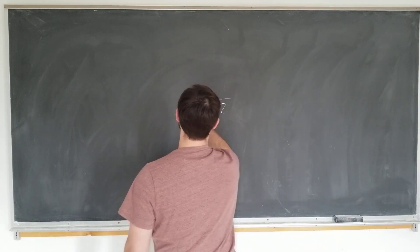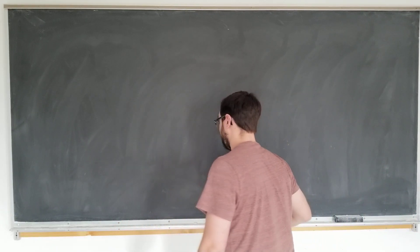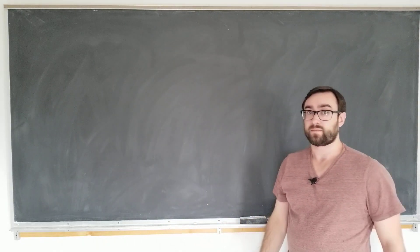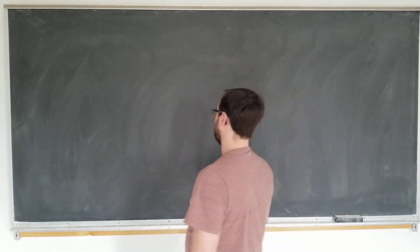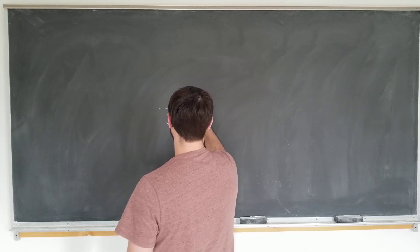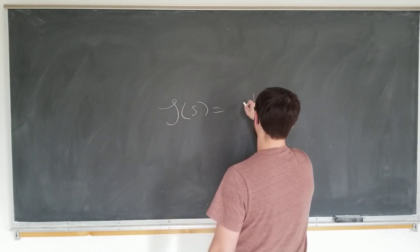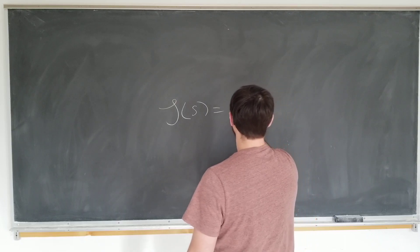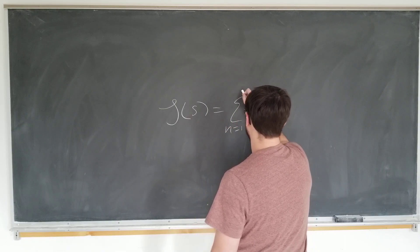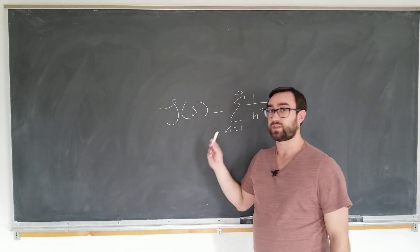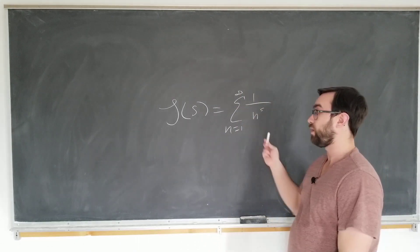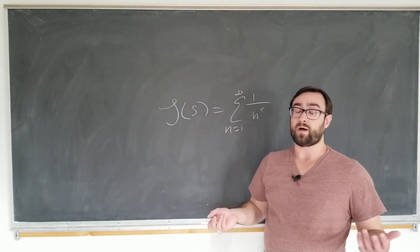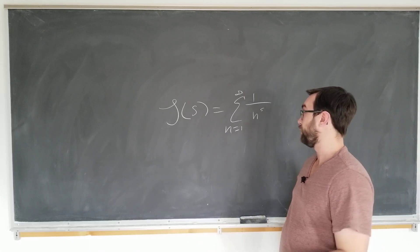We'll begin with the simplest possible case and we'll see that it's actually going to use the same function to regularize these. We're going to use the Riemann zeta function in both cases. It's what you get when you sum over 1 over n to the s. We can use the same zeta function to add up all the integers as to multiply all the integers together.